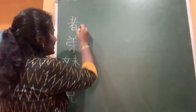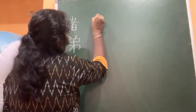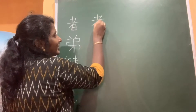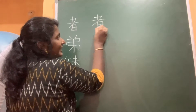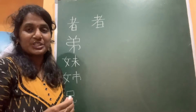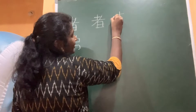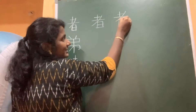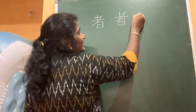For sha or mono, which means 'person', the stroke order is: one, two, three, four, five, six, seven, and eight. So this is the kanji for sha or mono, which means 'person', written in eight strokes.